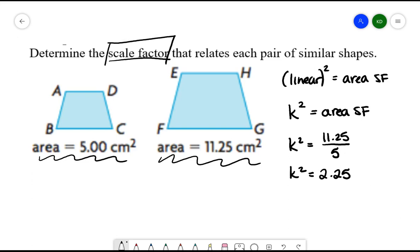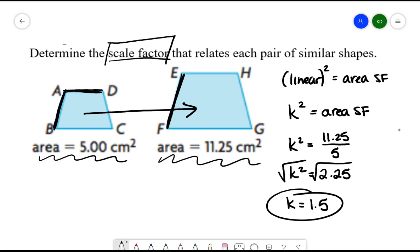If I want to just know what the linear scale factor is, I'm going to square root both sides and this will leave me with k. And what I'll have here is 1.5. So this value is saying that all of these side lengths, when I enlarge them from this shape into that one, each side length is going to be multiplied by 1.5 to go from the smaller trapezoid to the larger trapezoid. So let's try one more example.